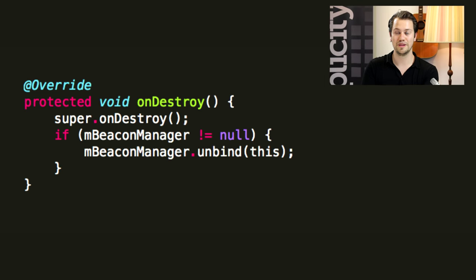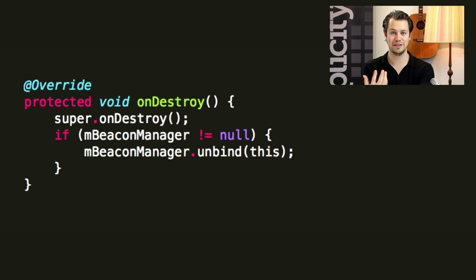So in short, all you have to do is the following: implement the BeaconConsumer, bind to the BeaconManager, and then in your callback method you can either set a monitor notifier, a range notifier, or even both. And don't forget to unbind again from the BeaconManager, which you can usually do in the onDestroy of your activity, fragment, or service.